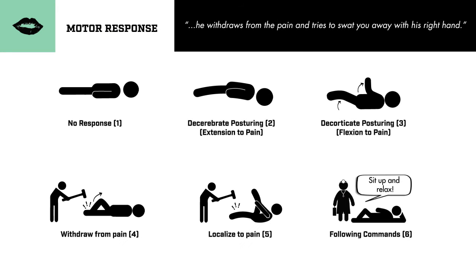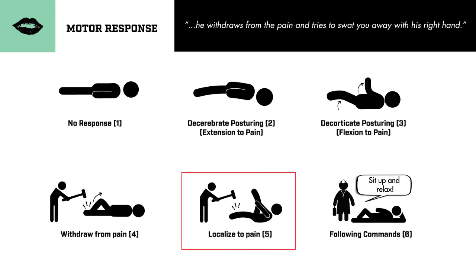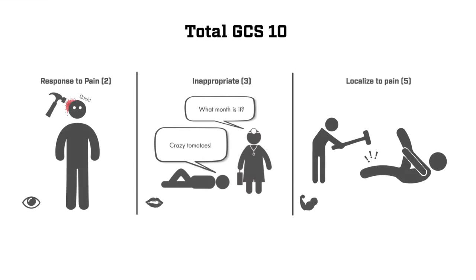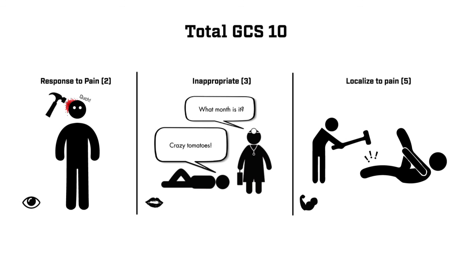In regards to motor response, this patient localizes to pain. He's able to cross midline and is able to feel where you're pinching or hurting him, and he's actively able to push you away. This would give him a score of 5, so in total he has a GCS of 10.